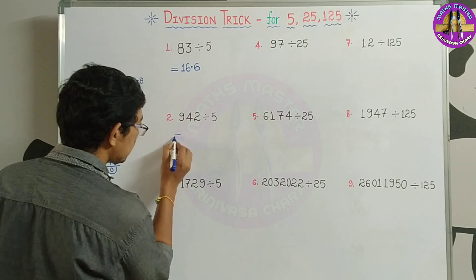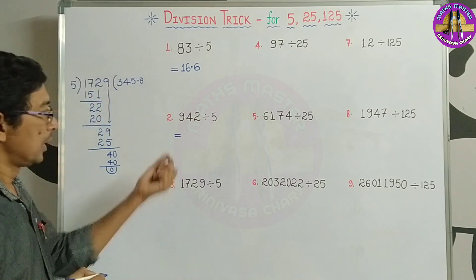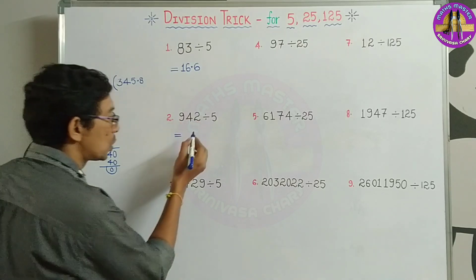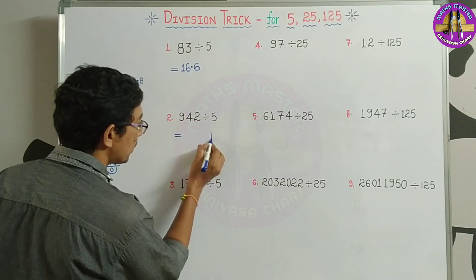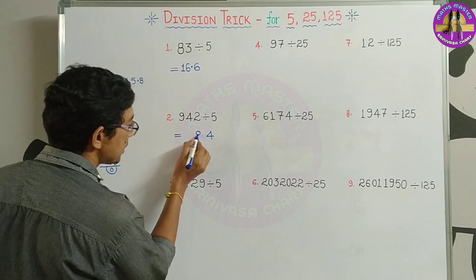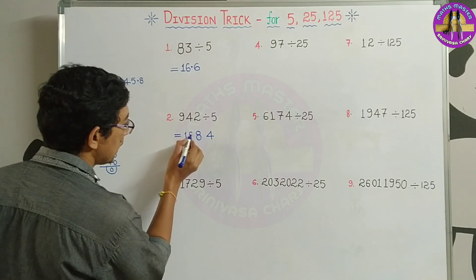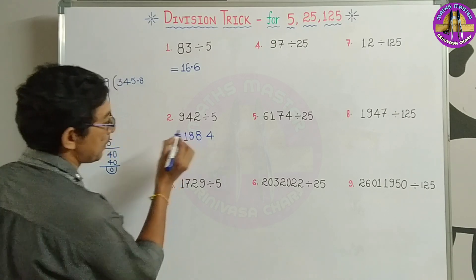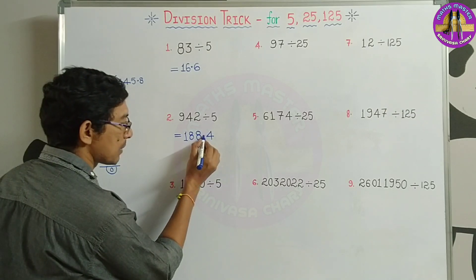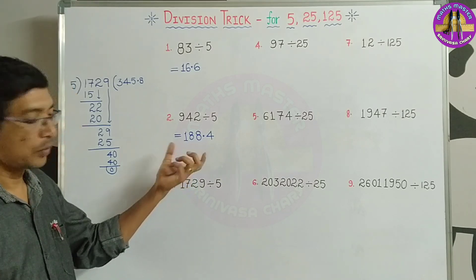We will do the 5th division. Double 2 digits: 2 doubled is 4. 4 doubled is 8. 9 doubled is 18. That means we multiply by 2. So the last one is equal to 1 digit. So the answer is 345.8.